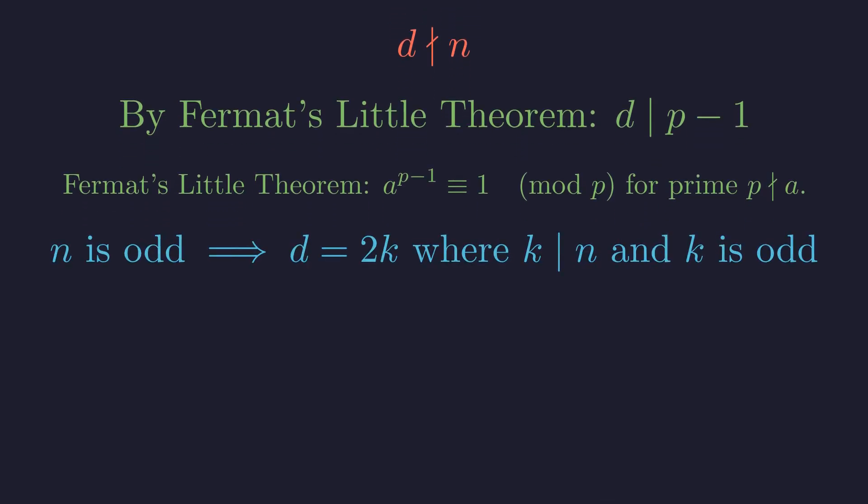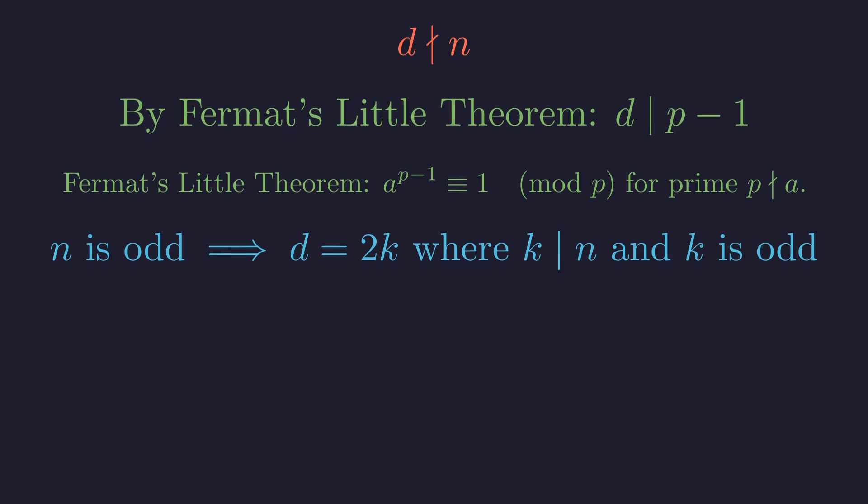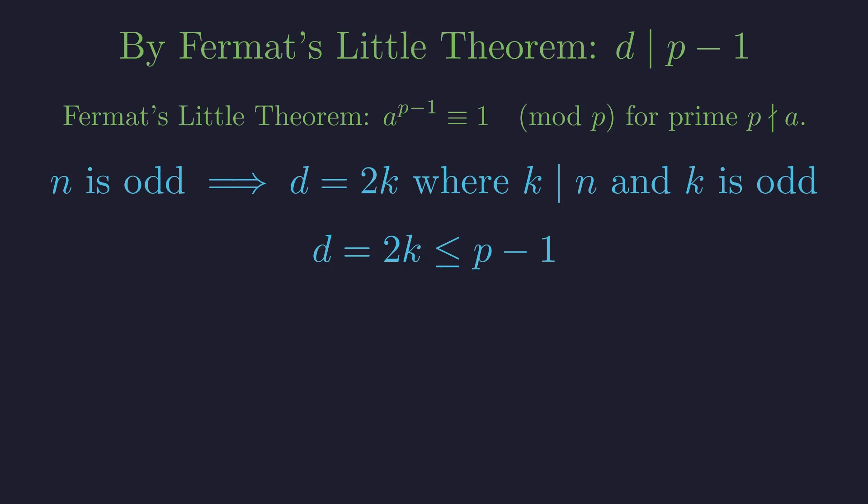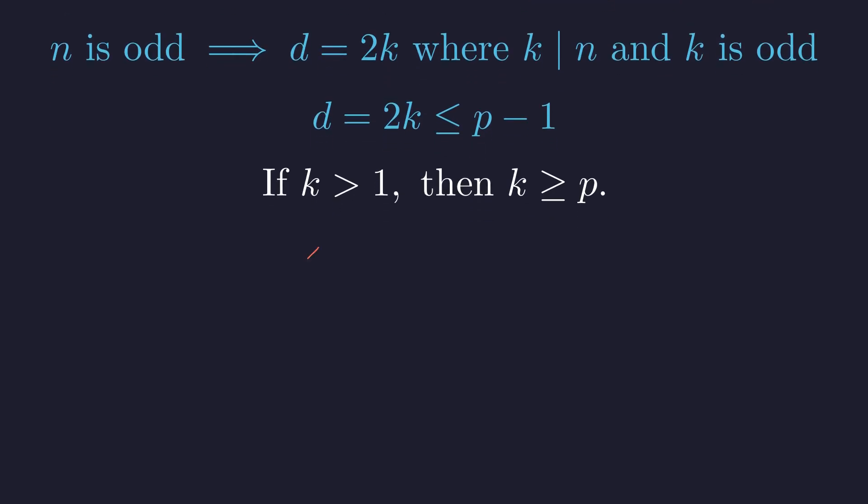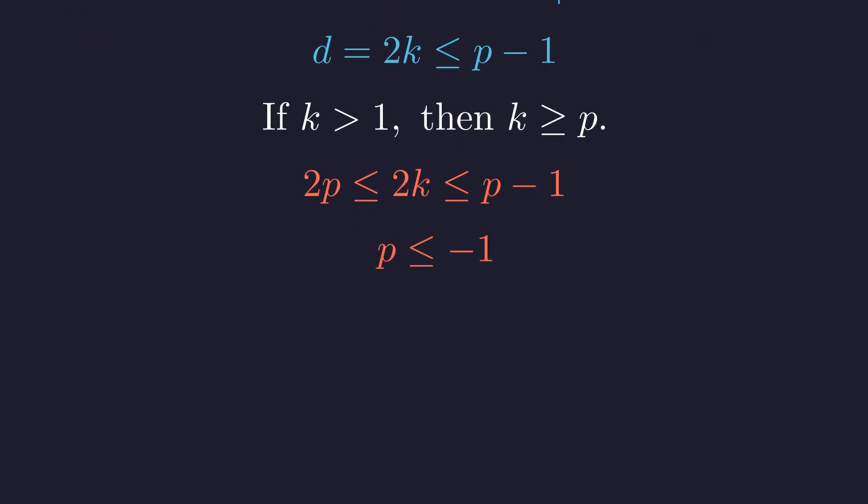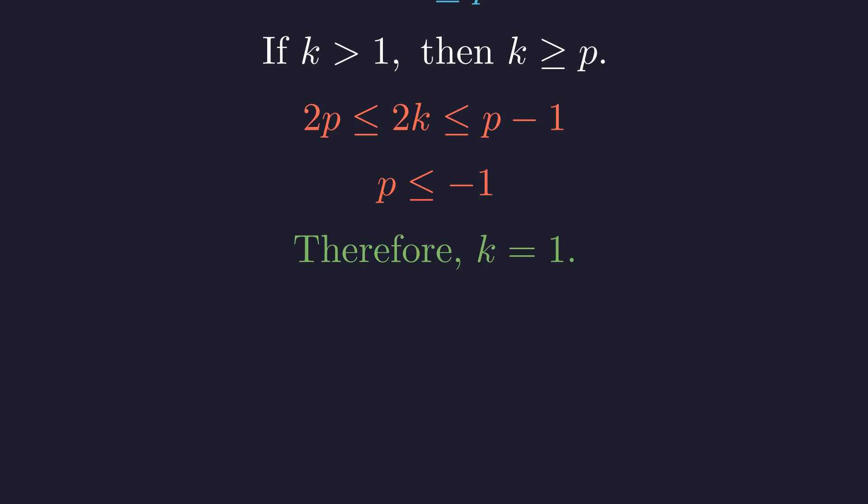Because we found its smallest prime factor is 3, n cannot be divisible by 2 and therefore must be odd. An odd number has zero factors of 2. Since d divides 2n but not n, d must have exactly one factor of 2. Thus, d has the form 2k, where k is an odd divisor of n. Substituting this back into our inequality from Fermat's little theorem, we get 2k is less than or equal to p-1. If k were greater than 1, it would have to be greater than or equal to p. Chaining these inequalities together, we'd have 2p is less than or equal to p-1. This leads to the absurd conclusion that p is less than or equal to negative 1, impossible for a prime. Our assumption that k is greater than 1 must be false.